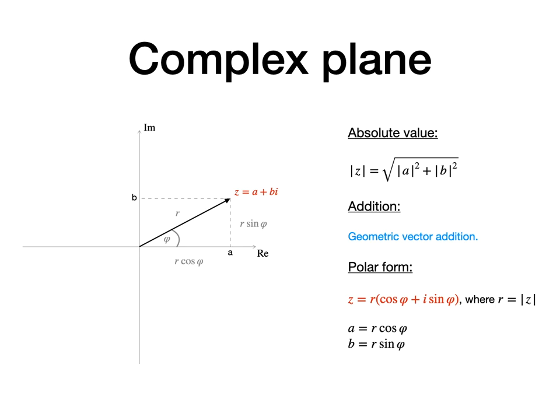The geometric interpretation also gives us the insight that a complex number can be written in terms of its vector length r and angle phi. From trigonometry, we know that a equals r times cosine phi and b equals r times sine phi. That can be written according to these identities and the resulting equation is the so-called polar form.